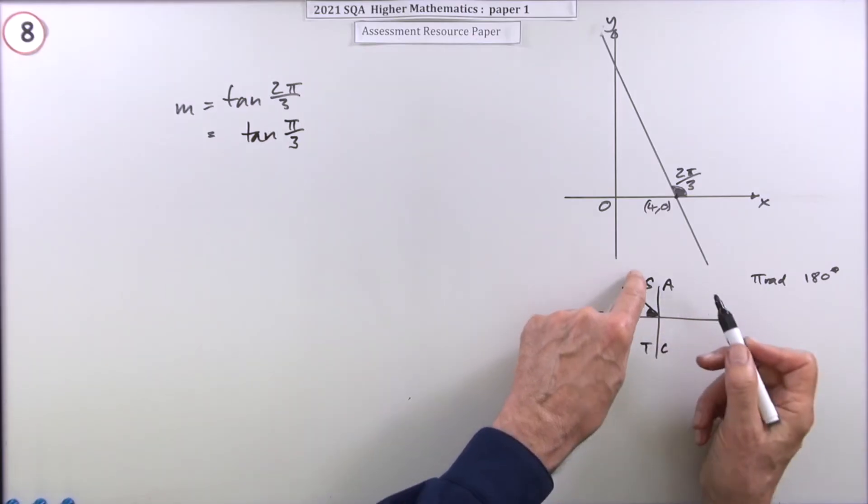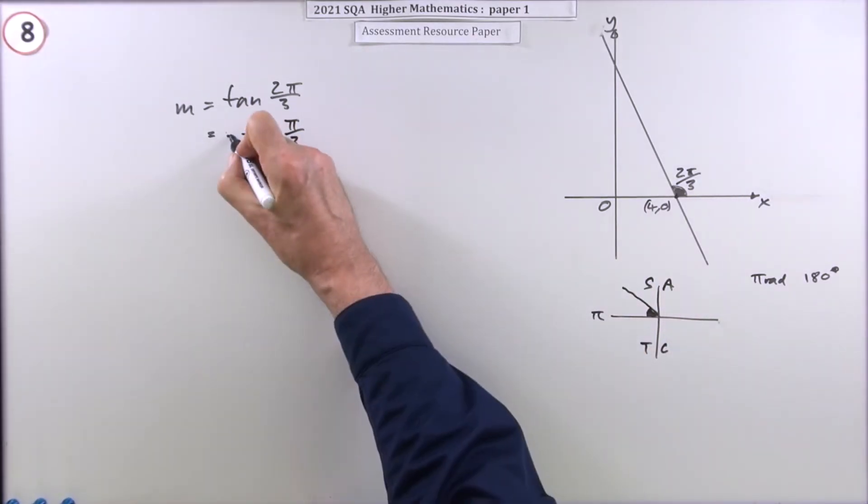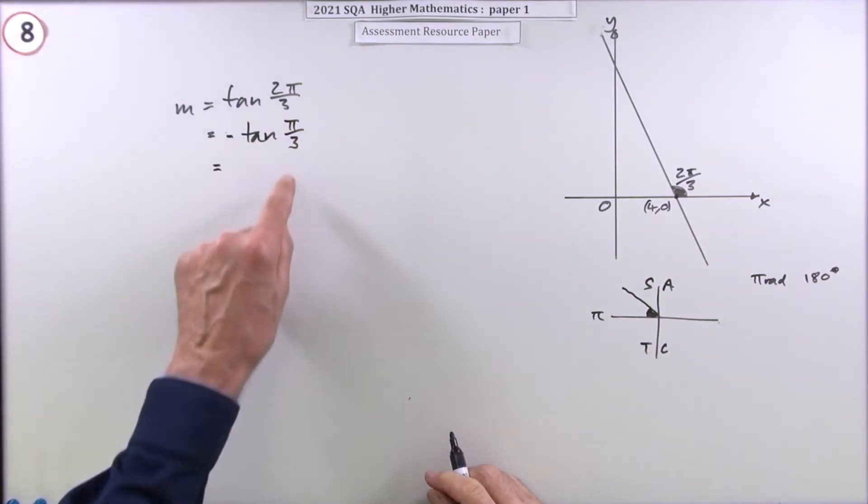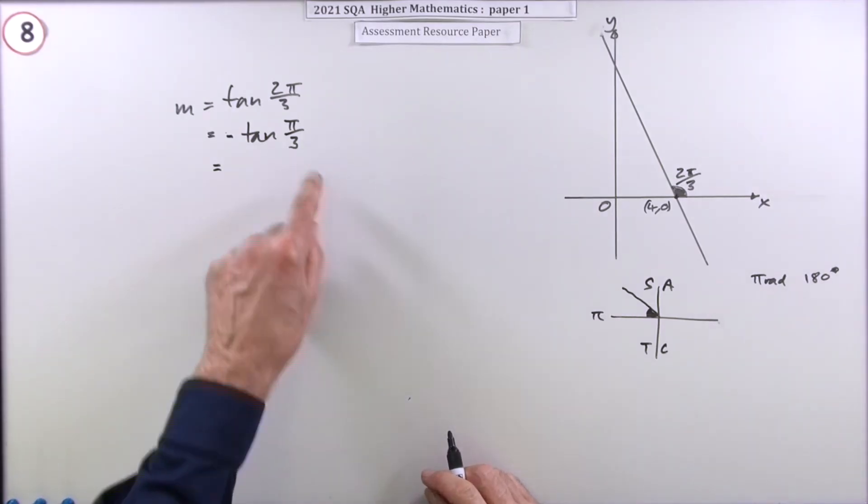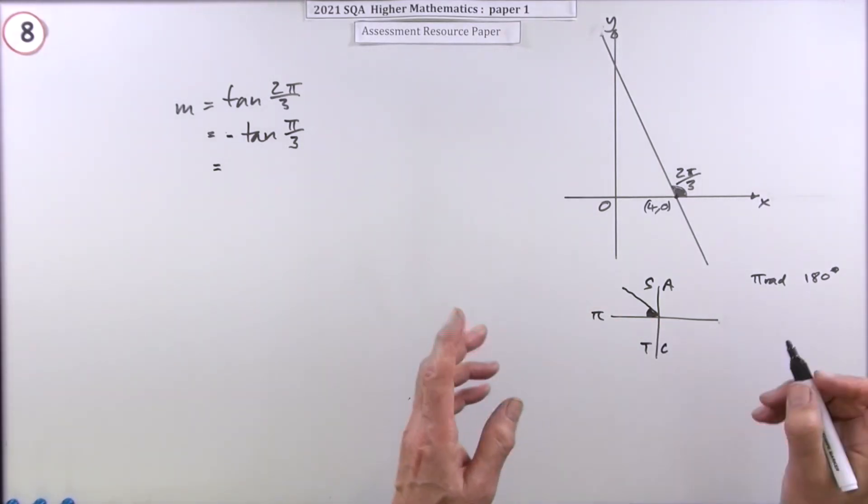Only in this quadrant, tangent's negative—only the sine's positive. Now you've got: what's the tangent of π upon 3? Well, it's paper one, so it must be one of the ones you know.